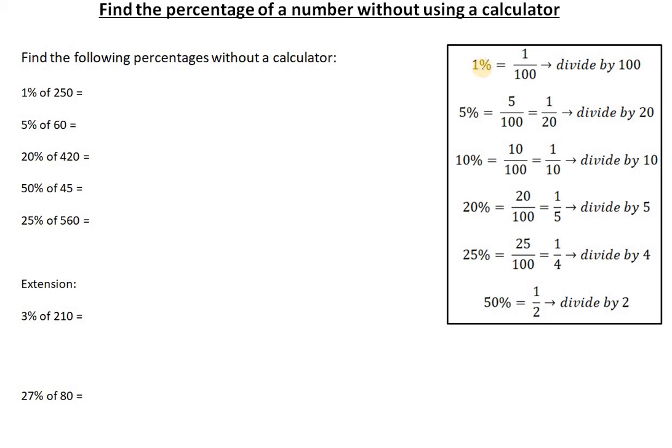For example, 1% can be found simply by dividing by 100, 5% is the fraction 1 over 20 which means that we can find 5% just by dividing by 20, and so on.